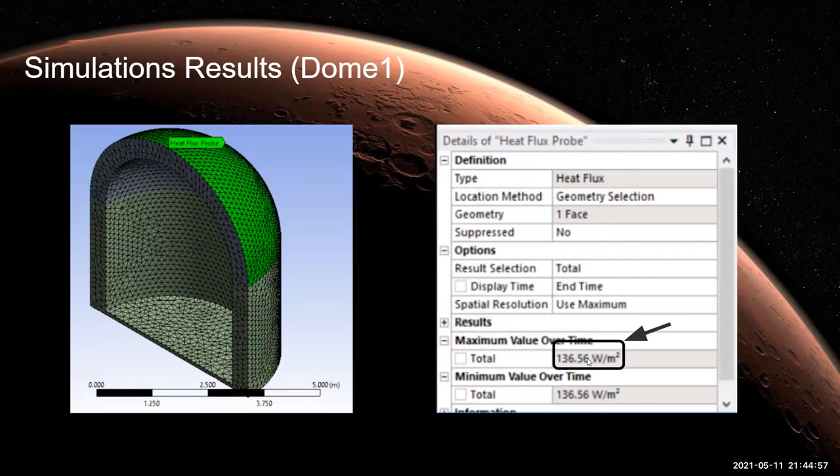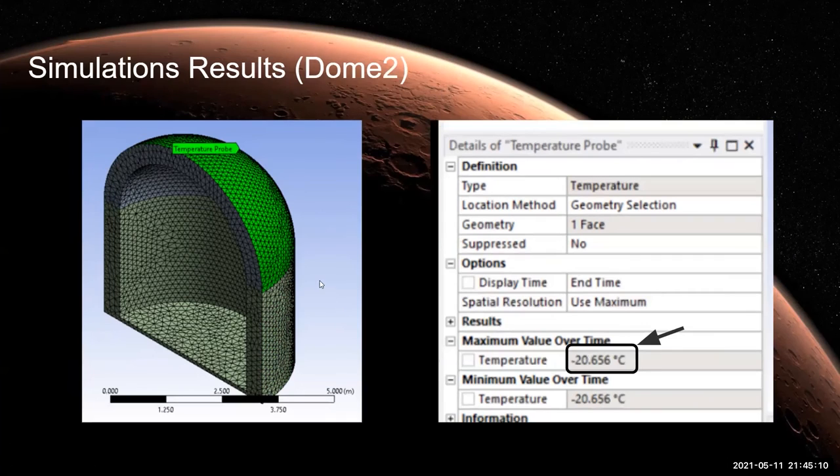Now we will perform simulations on dome shape structure. Here we can see that total heat flux coming out through this surface is 136.56 watt per meter square while temperature of this outer surface is minus 20.656 degree celsius.